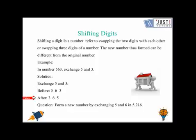After exchanging the digits, we get three hundred and sixty-five. So, simply by swapping the two digits, the number is changed. You can try this question by yourself by exchanging five and six. So, the new number you'll get is six thousand two hundred and fifteen.